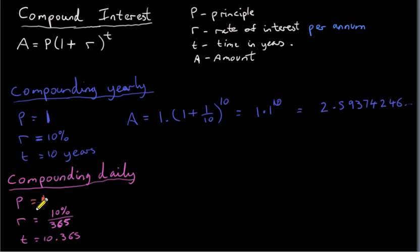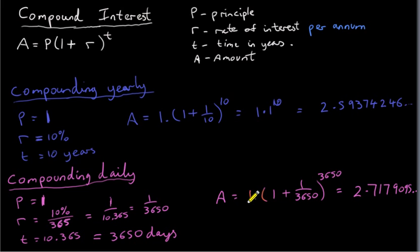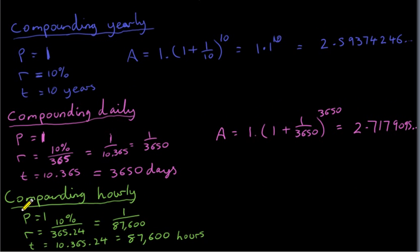Now let's suppose we're compounding daily, still with a principal of 1 euro. Since R is 10% per annum, the rate per day is 10% divided by 365, which is 1 over 3,650. The time in days is 10 years times 365, or 3,650 days. Plugging all that into our formula, we get 2.717905 and so on.